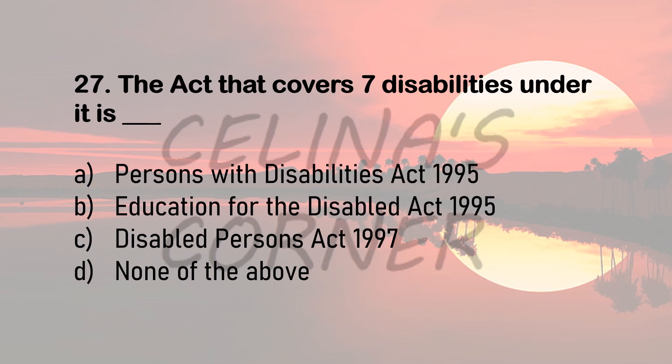Question 27. The Act that covers seven disabilities under it — disabilities such as hearing impaired, low vision, and others — which Act covers all these seven disabilities? Option A: Persons with Disabilities Act 1995. Option B: Education for the Disabled Act 1995. Option C: Disabled Persons Act 1997. Or none of the above? The correct answer is option A, Persons with Disabilities Act 1995.